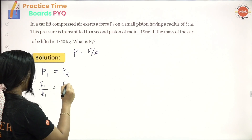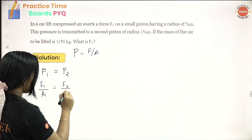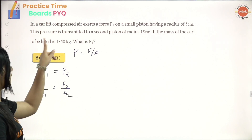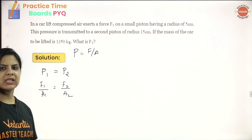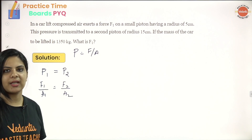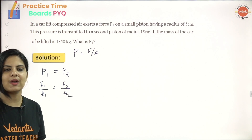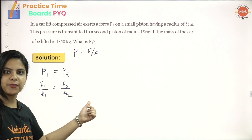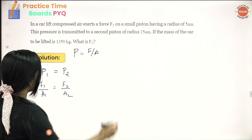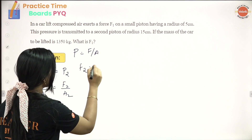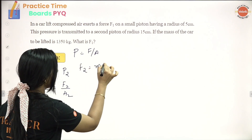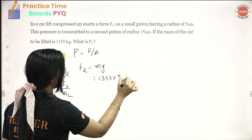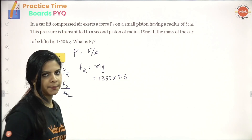How do we find P2? P2 is F2 divided by A2. If we are going to lift the car, F2 equals Mg — that is, 1,350 into 9.8.